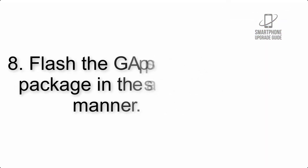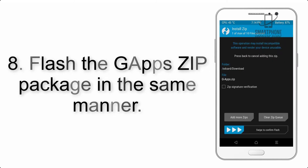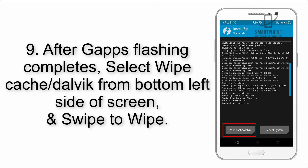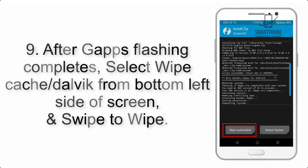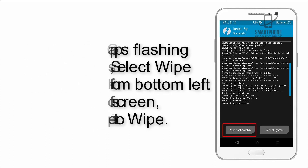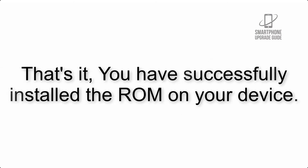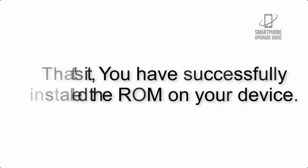Step 8: Flash the gapps zip package in the same manner. Step 9: After gapps flashing completes, select Wipe Cache and Dalvik from the bottom left side of the screen and swipe to wipe. Step 10: When the flashing process is complete, hit Reboot System. That's it — you have successfully installed the ROM on your device.